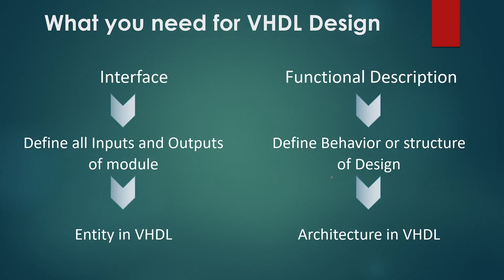In VHDL we define the interface using the entity, and we define the functional description using the architecture. The entity is the interface of our module, which means it has the information of all the inputs and outputs of our design. Entity is like defining the signals that are used for input and output of a digital system. Once we have created the entity we then describe the behavior of our design in the VHDL architecture.